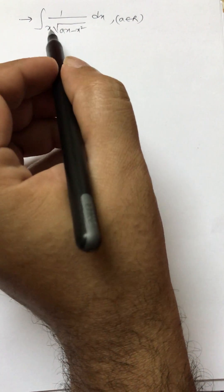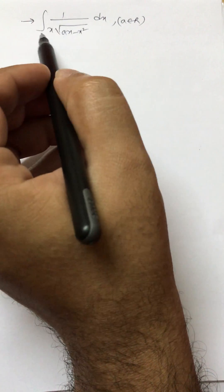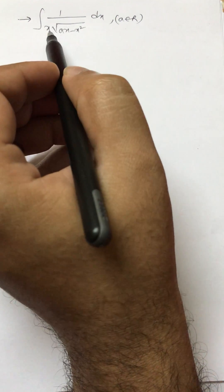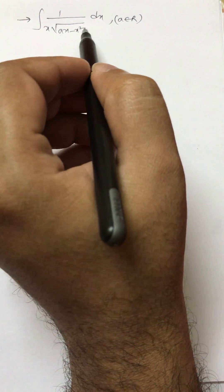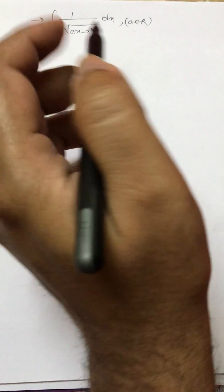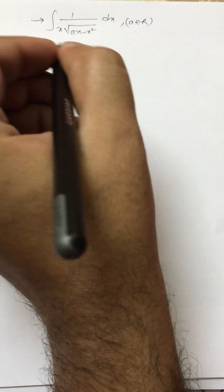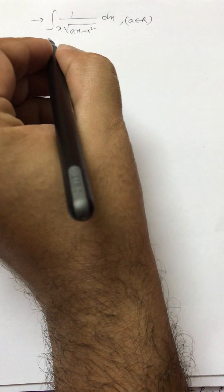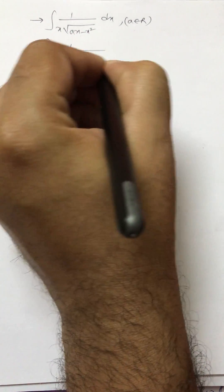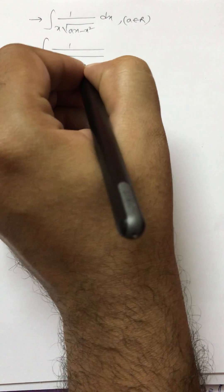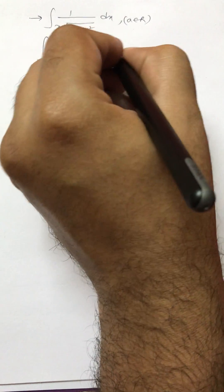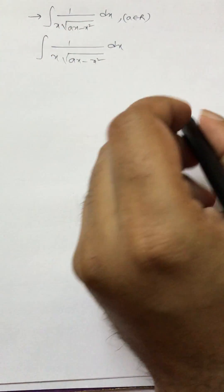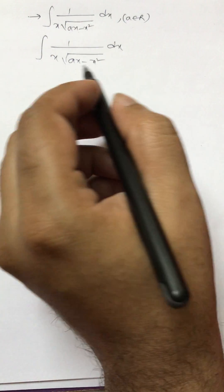Now we will look at how to solve the integral ∫ 1/(x · √(ax − x²)) dx, where a belongs to ℝ. So the integral is 1 by x into root of ax minus x squared dx. Now we have to solve this integral.